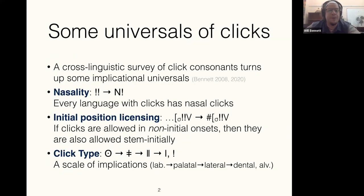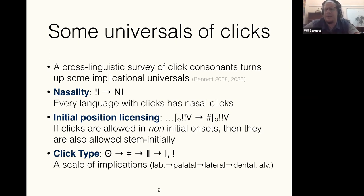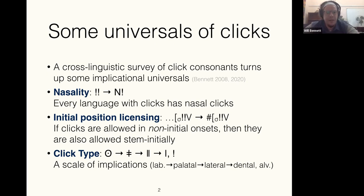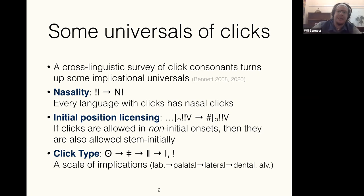The first finding concerns nasality: every language that has click sounds has nasal click sounds. Indeed, there are languages that have only nasal clicks, but no languages that have clicks and lack nasalized clicks. So if a language has any clicks at all, it has nasal ones. There's also an implication about position: if a language allows clicks in the middle of a word — in a word-medial onset — then it also allows clicks at a word-initial or stem-initial position.